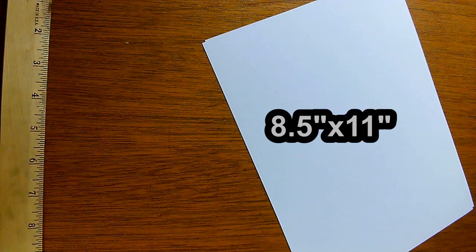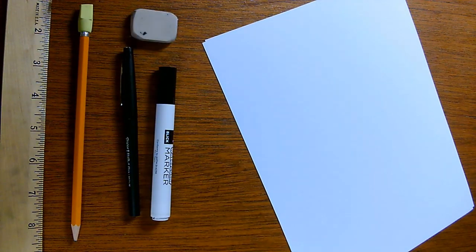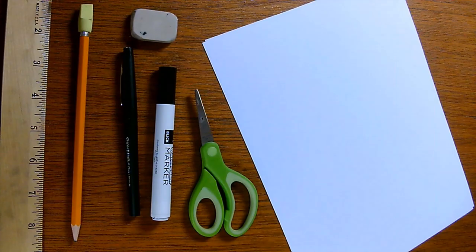So to do this you'll need an eight and a half by eleven sheet of paper, a pencil, an inking pen, black ink, maybe a marker or two if you want thick lines, maybe an eraser, and how about a pair of scissors.